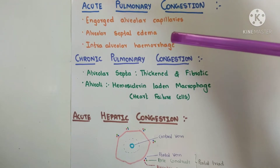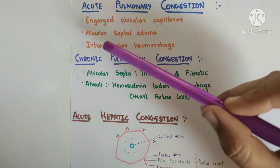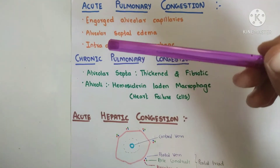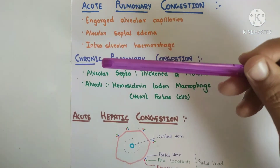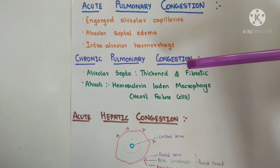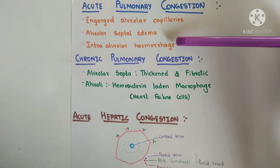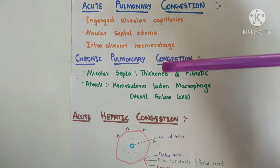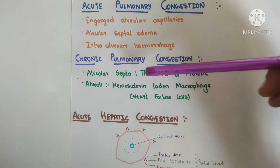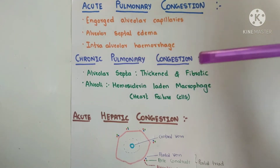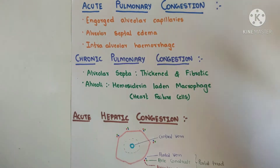When pulmonary congestion lasts for a long period and becomes chronic, there will be inflammation and our alveolar septa will become thickened and fibrotic. Due to extravasated RBCs being phagocytosed and catabolism of RBCs, this leads to formation of hemosiderin-laden macrophages, which are also known as heart failure cells.